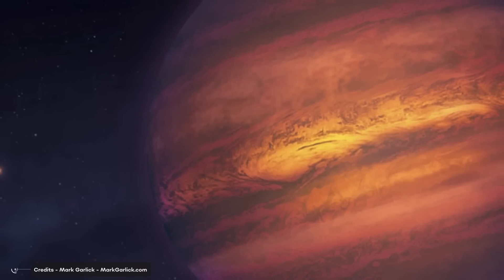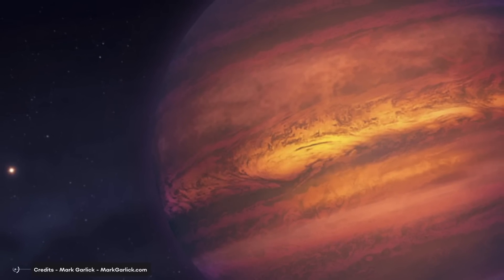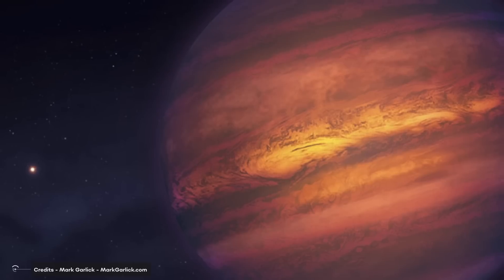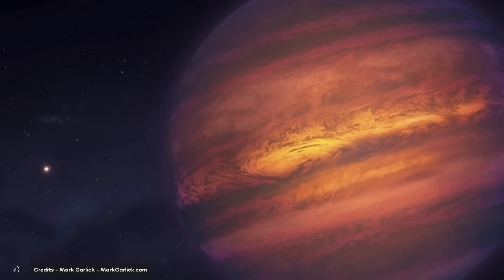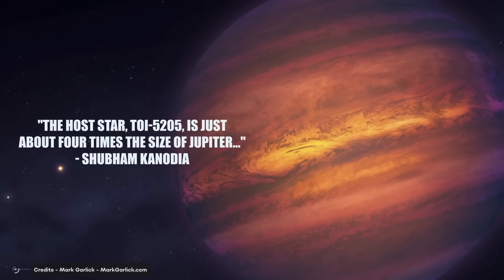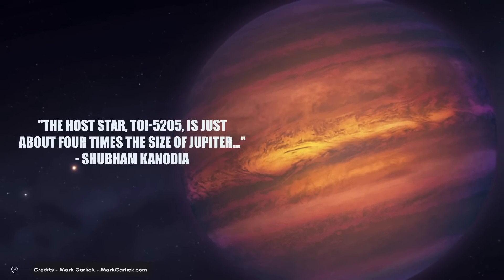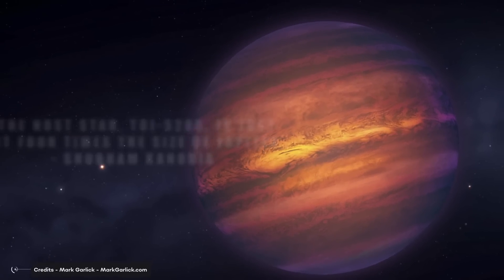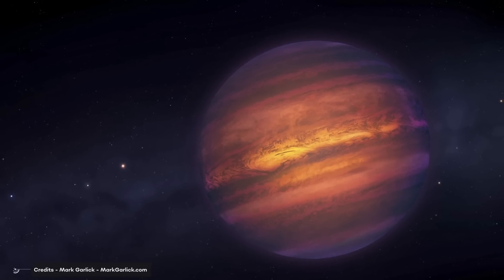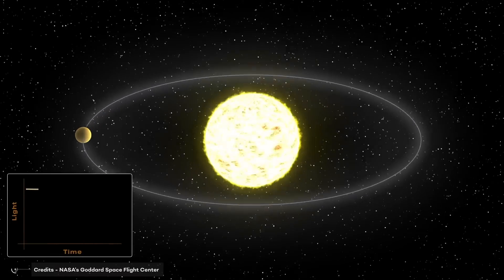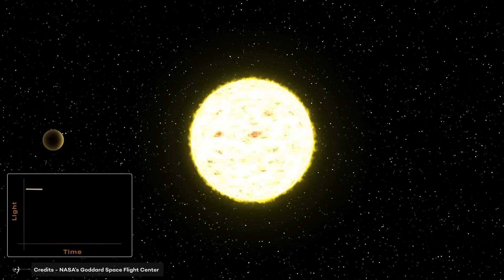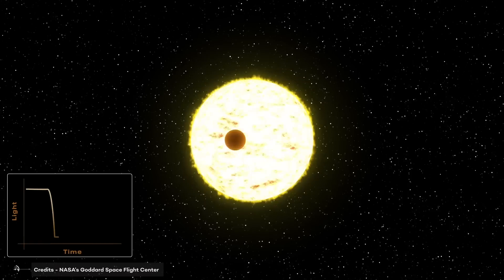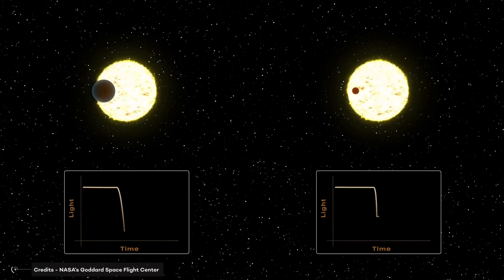Shubham Kanodia, a post-doctoral fellow at the Carnegie Institute for Science in Washington, D.C., was surprised by the new discovery. The host star, TOI-5205, is just about four times the size of Jupiter. Yet it has somehow managed to form a Jupiter-sized planet, which is quite surprising, he said. To give you a better perspective, allow me to compare the planet to a pea orbiting around a lemon. While in our solar system, Jupiter could be compared to a pea around a grapefruit, representing our sun. Can you understand the difference?